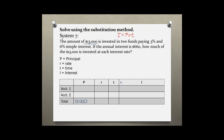There are two funds — one paying 3% and the other paying 6% — so those are my rates. My first account is at 3% and my second account is at 6%. Since it mentions annual interest, the time is one year. The total interest paid out after that one year is $660.